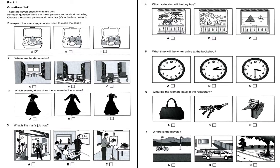Now listen again. Mum asked me to buy her a calendar. Shall I get this one with pictures of mountains, or this one with boats on it? She loves sailing, so get that one. I like that one with wild animals, but I don't suppose Mum would. And you can't get the one with mountains, because she had that last year. Yes, I know. I'll get the one you suggested then.